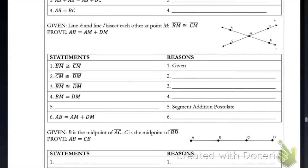We're trying to prove that the length AB equals AM plus DM. Our first given statement is that BM is congruent to CM. We really need to focus on the word bisect — bisect means to cut in two, like bicycle with two wheels. Bisect means two equal parts. Since those two lines bisect each other, the segments AM and MB are going to be congruent, and also segments CM and DM have to be congruent since they're both being bisected. BM and CM are congruent as well. So there are a lot of things that are congruent in our picture based on our given information.